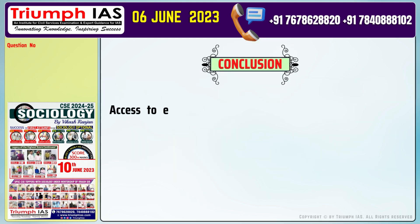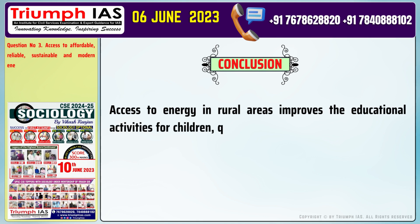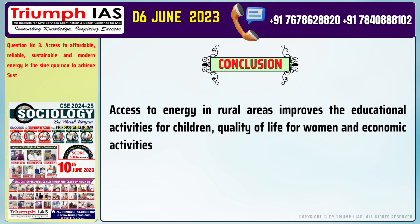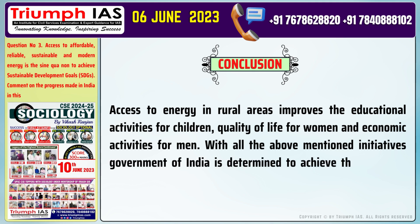Conclusion: Access to energy in rural areas improves educational activities for children, quality of life for women, and economic activities for men. With all the above-mentioned initiatives, the Government of India is determined to achieve SDG 7 by 2022.